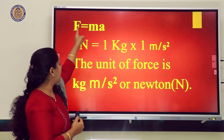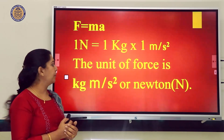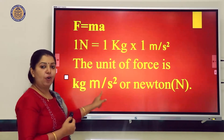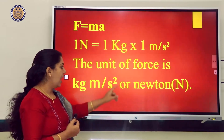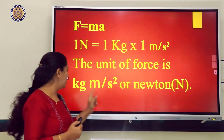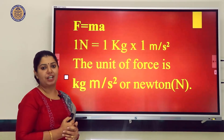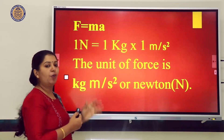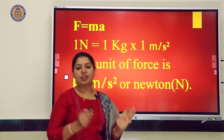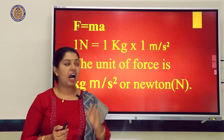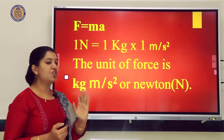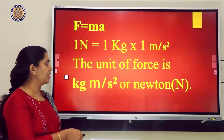The unit of force is kilogram·meter per second squared, and another unit is Newton. Newton is the same as kg·m/s² — instead of writing kg·m/s², we write Newton. So the unit of force is Newton, and 1 Newton of force equals 1 kg × 1 m/s².